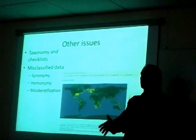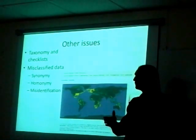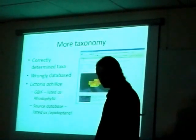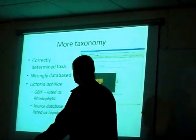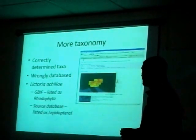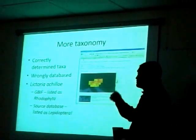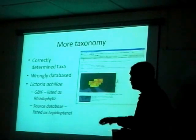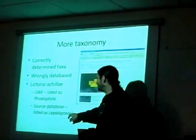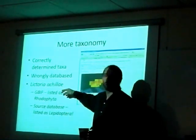When you search for a name, we need to make sure that we're fetching the name that we intend. So look through the taxonomy. Here's another example of errors associated with GBIF where a particular species was listed as Lepidoptera rather than it being a plant.